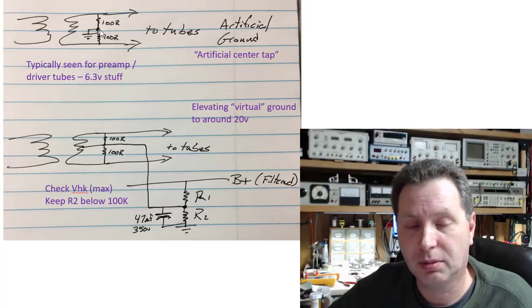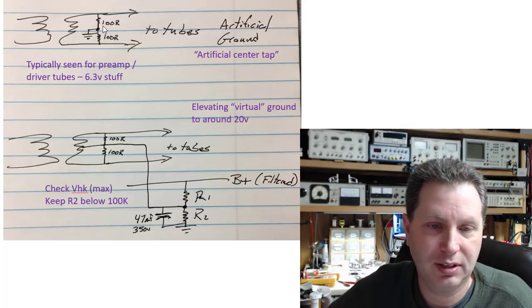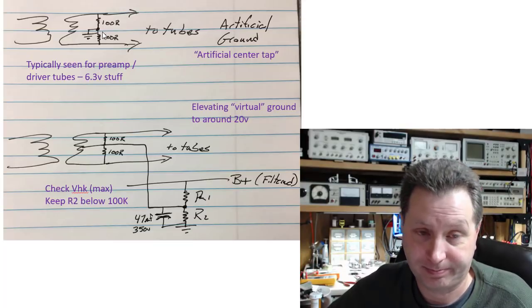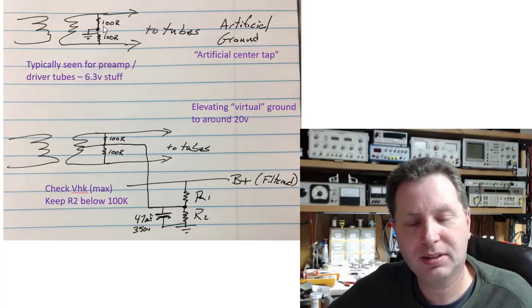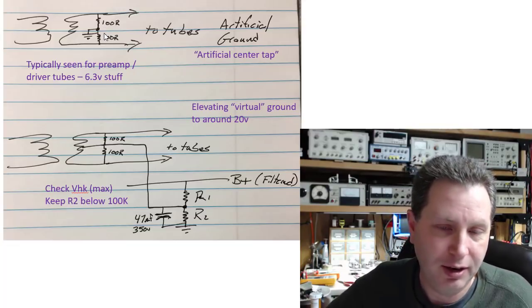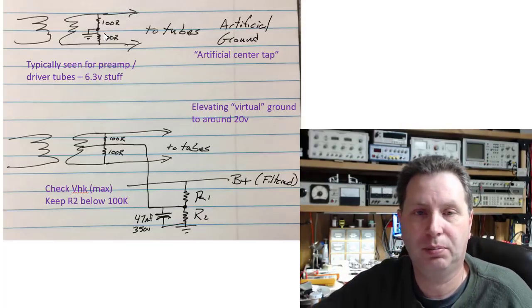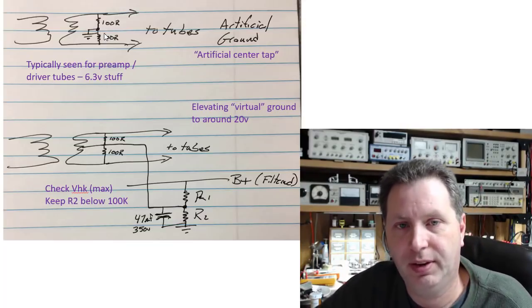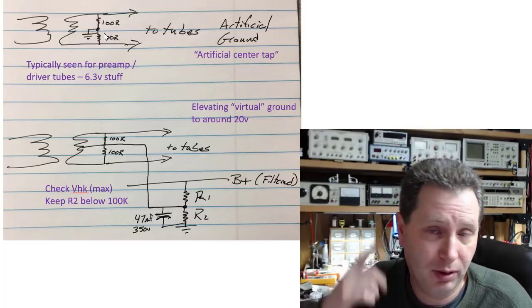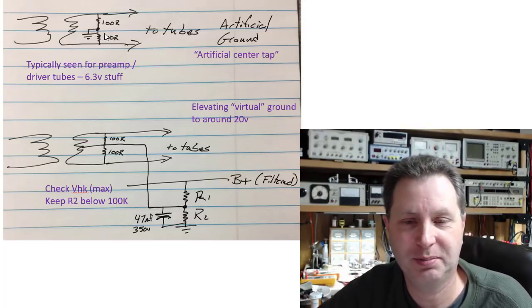So then you've got an adjustable, and you could adjust the center tap to be slightly off one side or slightly off the other side. And you can adjust that to get the minimal amount of hum that you possibly could feeding the output. So it'd be a little bit of an ear adjustment after the fact.